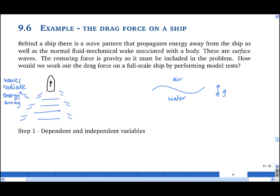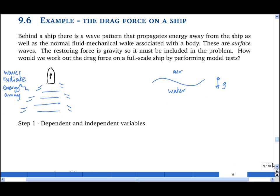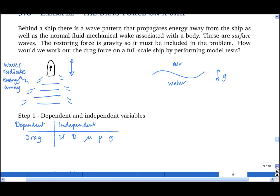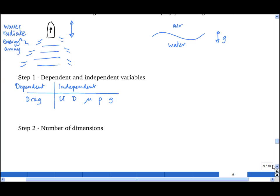Step one: write down the dependent and independent variables. In this case, I'm only interested in the drag. The independent variables are the speed of the boat, which I'll call u, the size of the boat, which I shall measure by its length and give the symbol D, the viscosity of the water, the density of the water, and g, the gravitational acceleration. We count up the number of dimensions and the number of variables. There are six variables, three dimensions, and therefore we're expecting three dimensionless numbers.